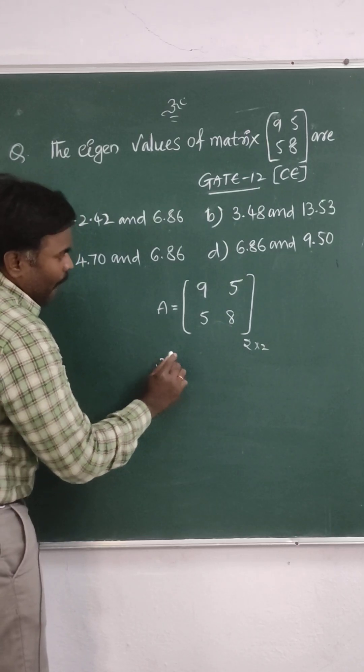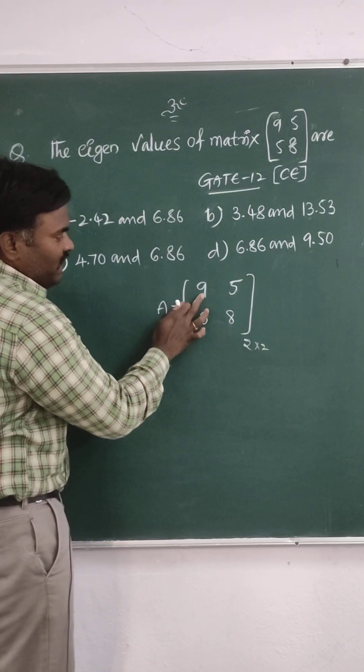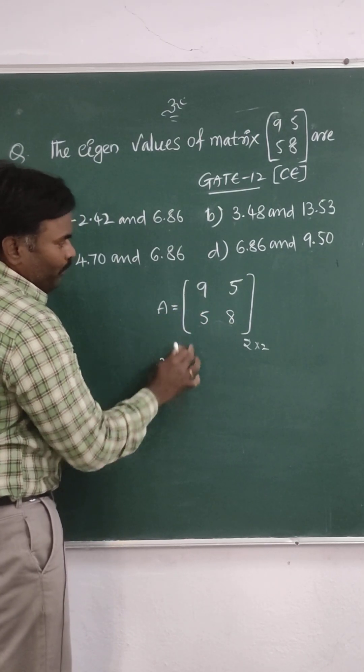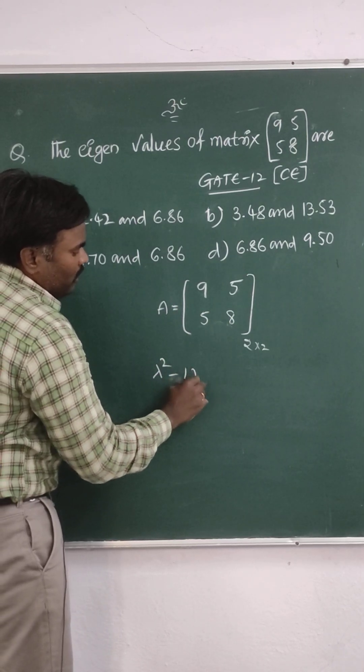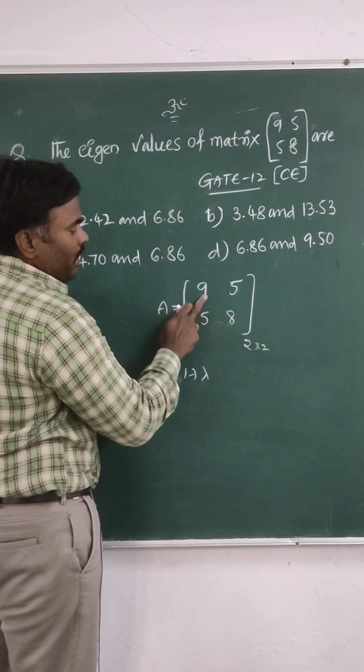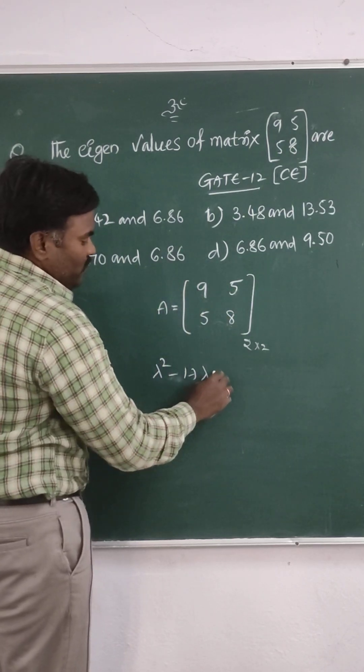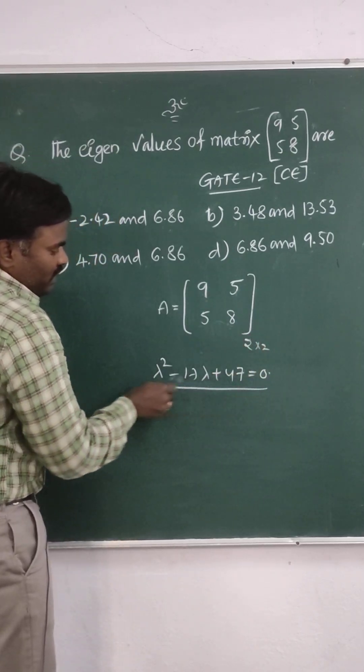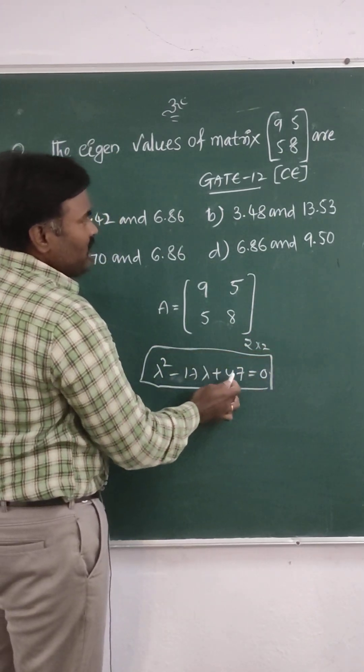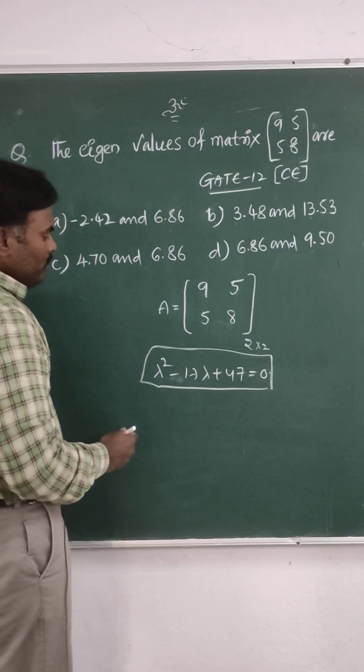The characteristic equation for this is lambda squared minus trace A. Trace A means sum of the diagonals - 9 plus 8 is 17. So this is lambda squared minus 17 lambda plus determinant. 72 minus 25 is 47, equals 0. So this is the characteristic equation you have. Based on this we have to find out the eigenvalues.